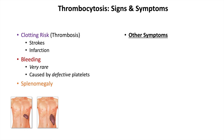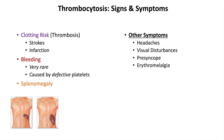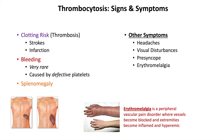Other symptoms include headaches, visual disturbances, and presyncope — patients with high platelet levels can have lightheadedness. Erythromelalgia is also a symptom: it is a peripheral vascular pain disorder where vessels become blocked due to so many platelets, causing the extremities to become inflamed and hyperemic — extremely swollen and red. An image here shows one arm more swollen and erythematous than the other, demonstrating erythromelalgia.